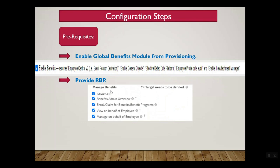The third prerequisite is to create the required pay components. When talking about insurance type benefits, there will be employee and/or employer contributions. The system measures how much contribution is being made via pay components. As a prerequisite, those insurance-related pay components should already exist in the system. These are the three basic prerequisites before going into insurance type benefits configuration.